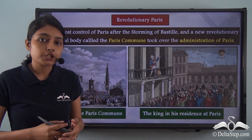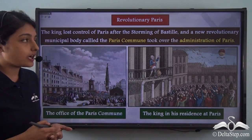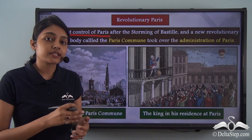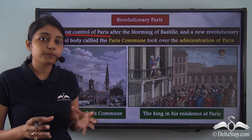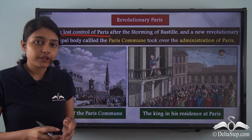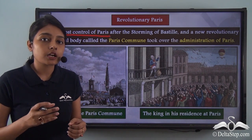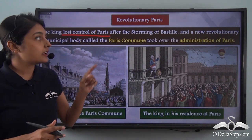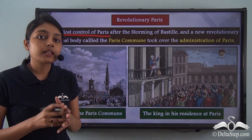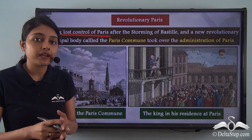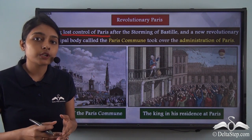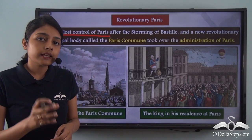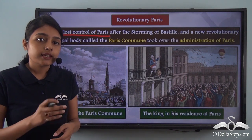With the demolition of Bastille, the King of France lost his control of Paris. Even before the Bastille was stormed, the revolutionaries had already taken control of many important government offices. It is with the final fall of Bastille that the King lost his control over the city of Paris. Revolutionaries were now in charge of major government offices, and the King lost his power.